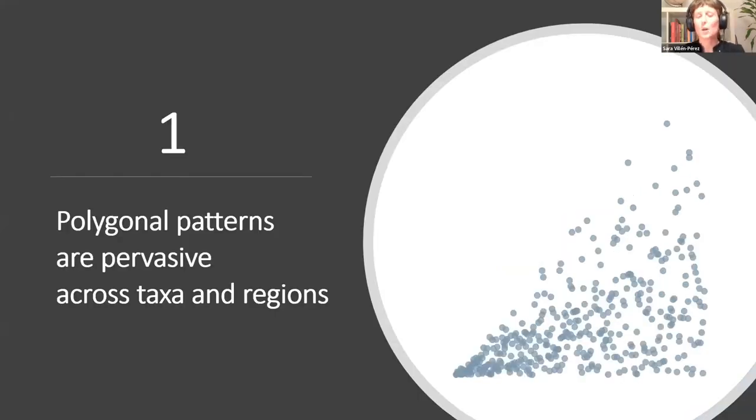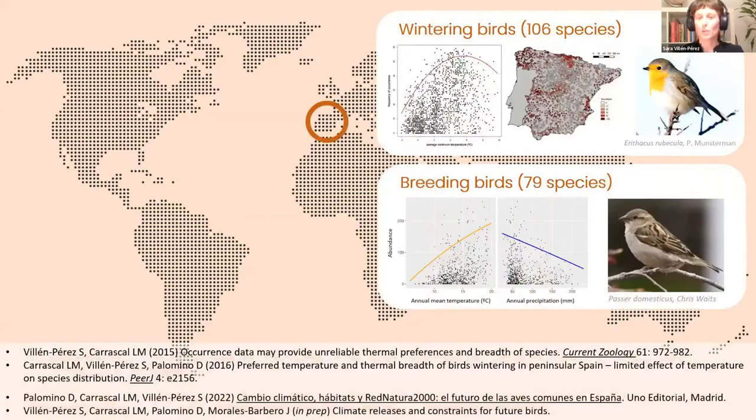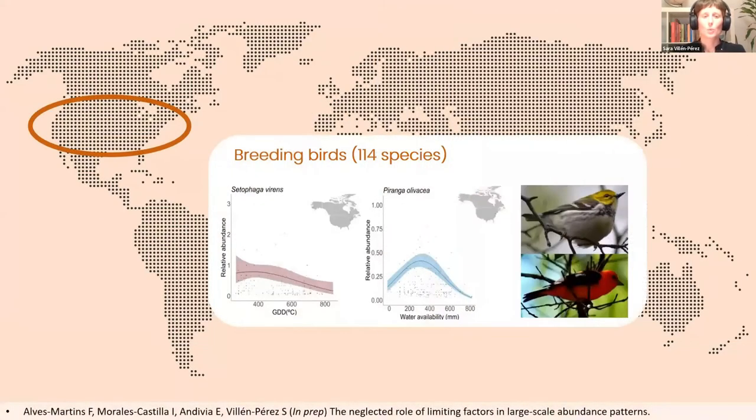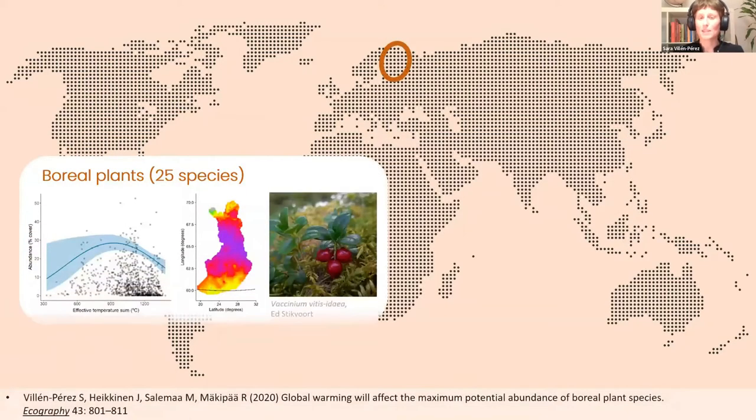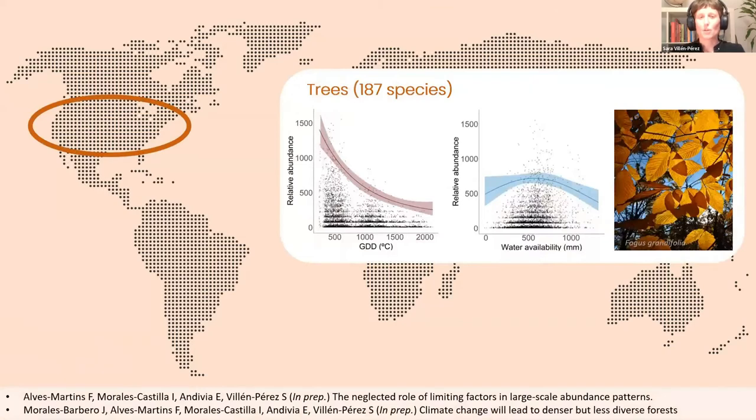We found that polygonal patterns are pervasive across taxa and regions. We found them in peninsular Spain, both in wintering birds and breeding birds from different databases. We also found them in the United States in breeding birds, in plants, in boreal plants of the understory layer in Finland, and also in trees in more than 180 species of trees in the United States.